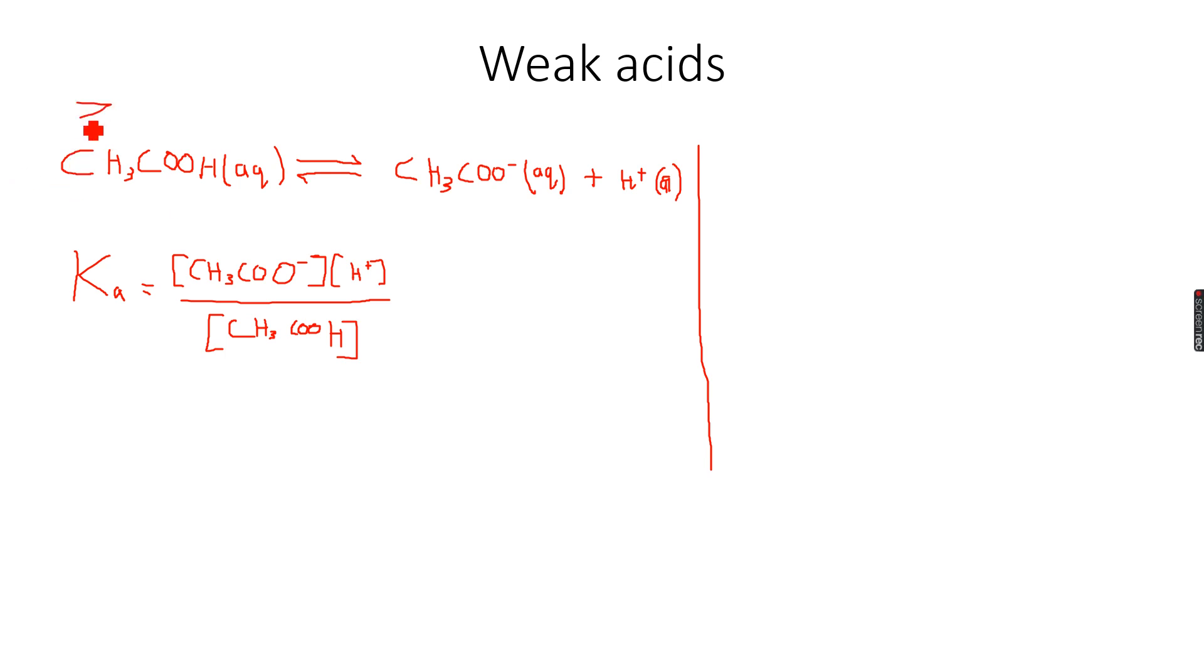If I have Z moles of this in total, only X will dissociate. I have Z in total, but only X moles of this will dissociate. So for example, I have 25 moles in total, 25 mole per dm³. Let's take the concentration as 25 mole per dm³, but only 1 mole per dm³ dissociates. Actually, let's take 0.5.